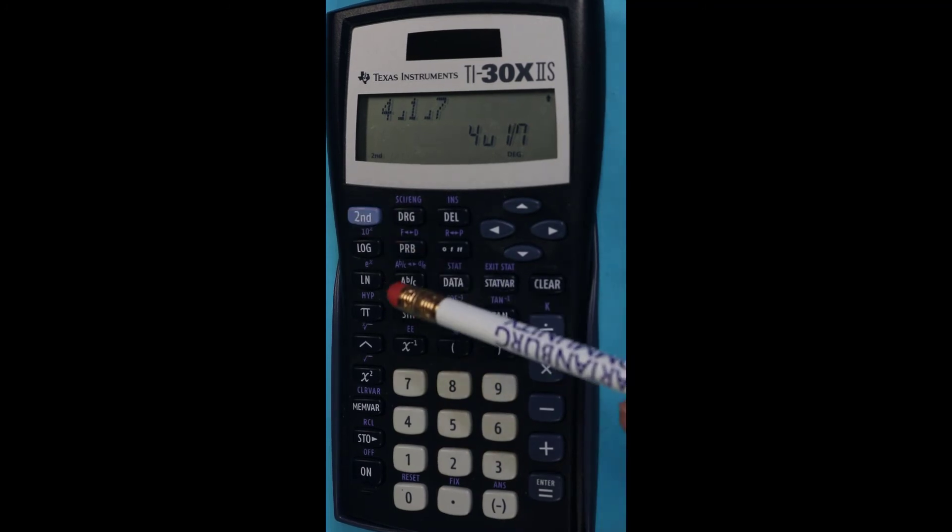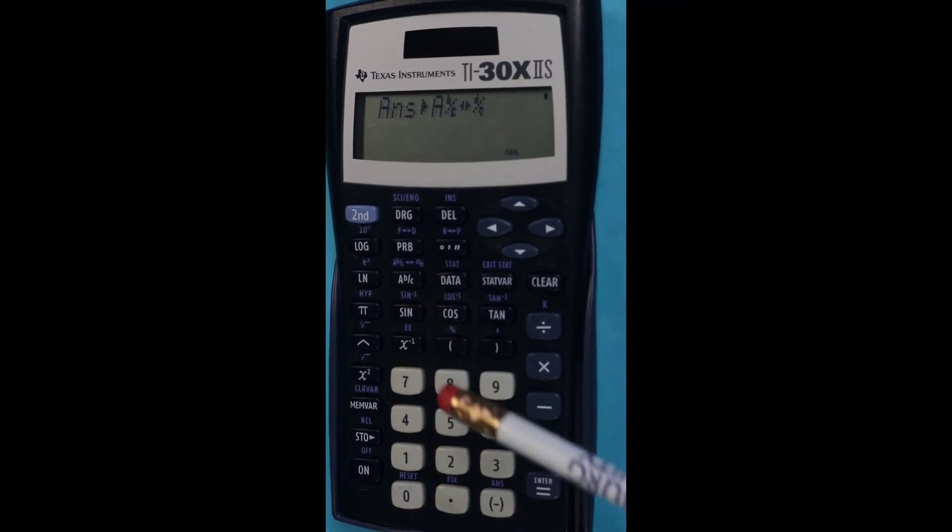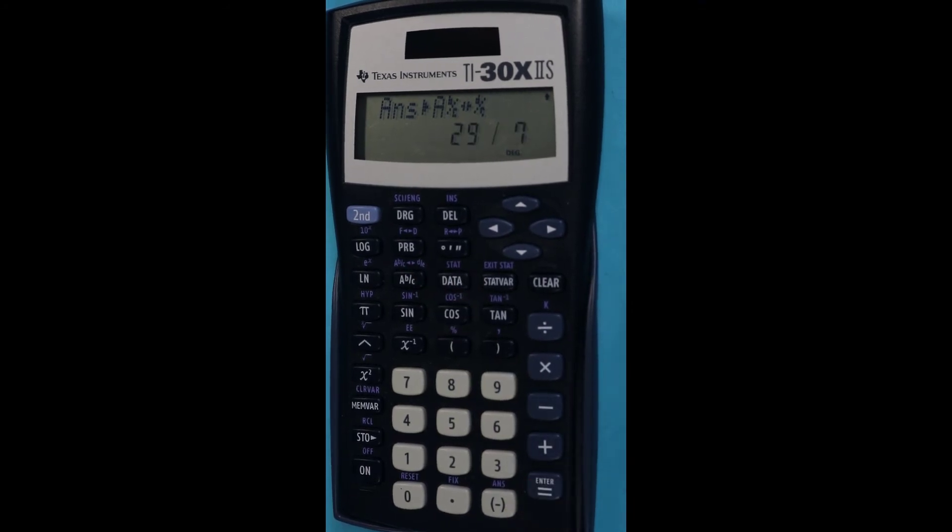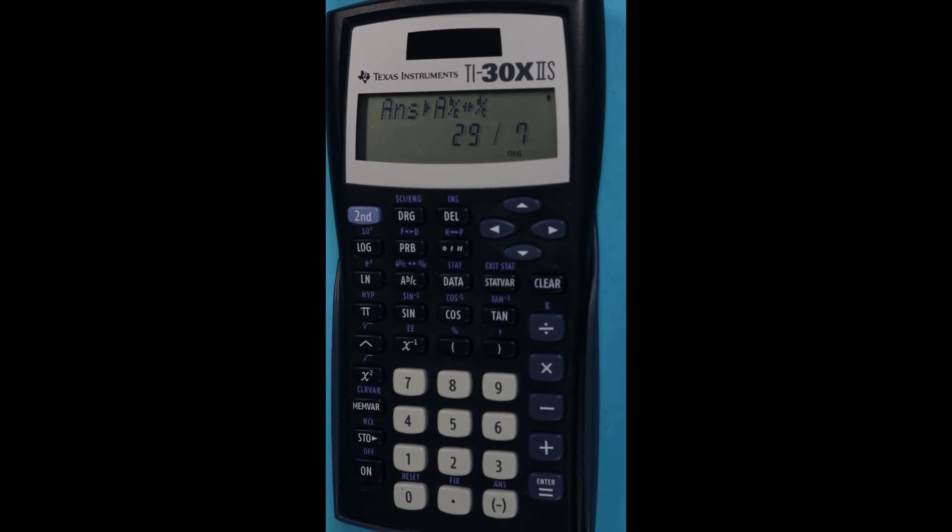And then I'm going to take mixed and convert it to improper using that second D over C, enter. And that converts it to an improper—I can't see it—29/7.